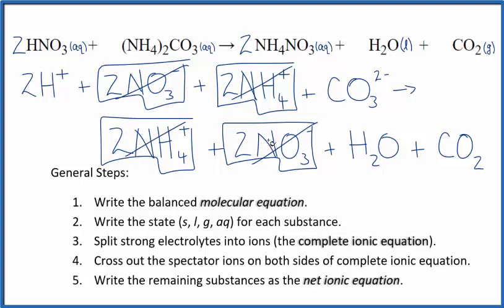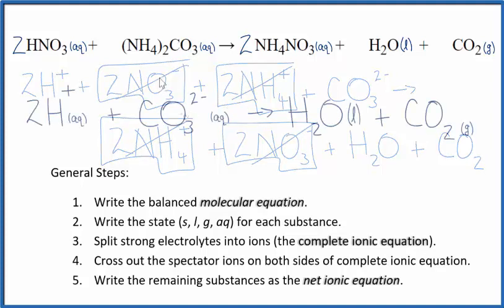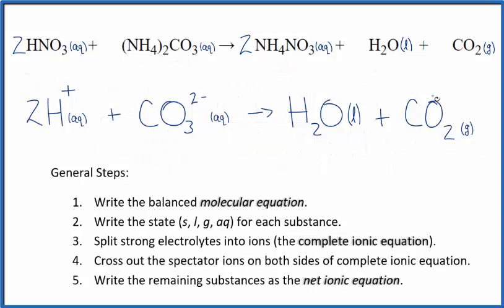What's left, that's the net ionic equation for HNO3 plus (NH4)2CO3. I'll clean it up. Write the states. We'll have our net ionic equation. So this is the balanced net ionic equation for nitric acid and ammonium carbonate.